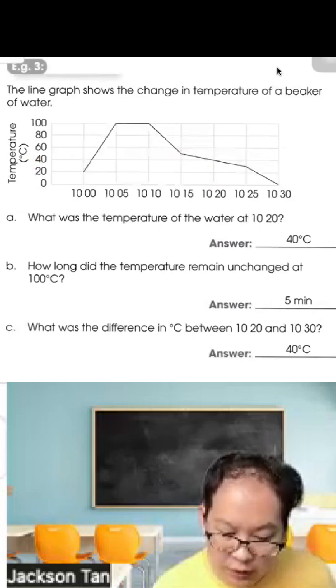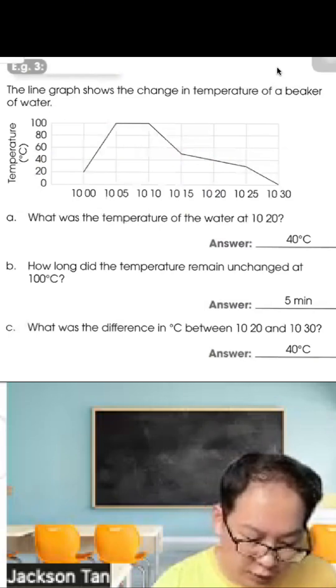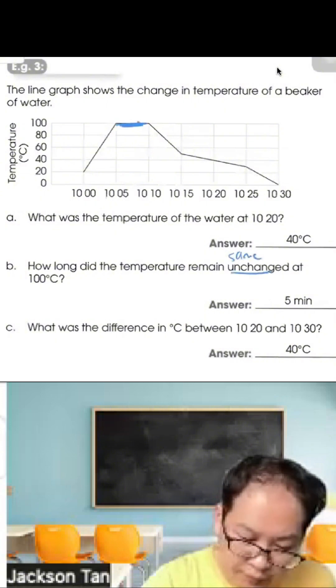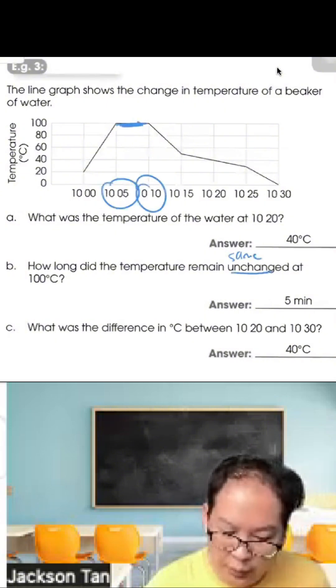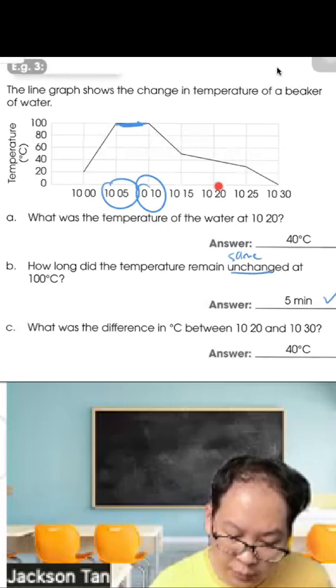How long did the temperature remain unchanged at 100 degrees Celsius? Starting from this line, you see unchanged means same. 10:05 to 10:10, so the difference is 5 minutes. What was the difference in degrees Celsius between 10:20 and 10:30? Decreased by 40 degrees Celsius.